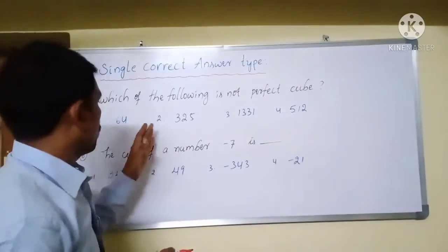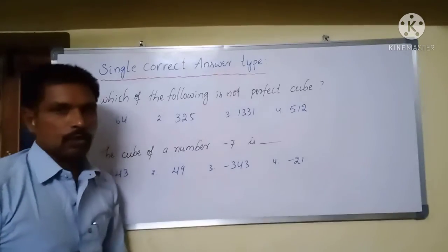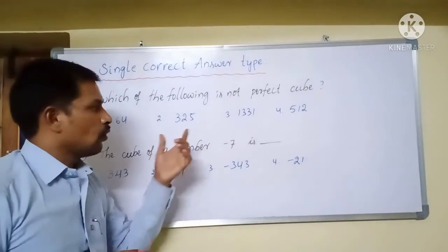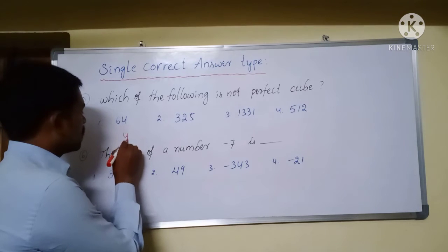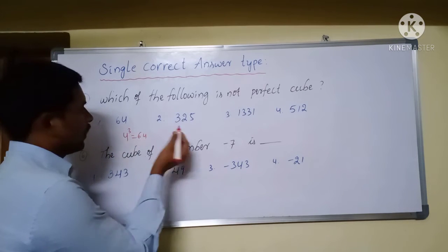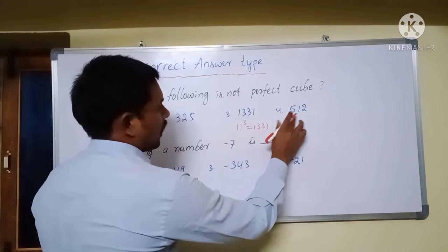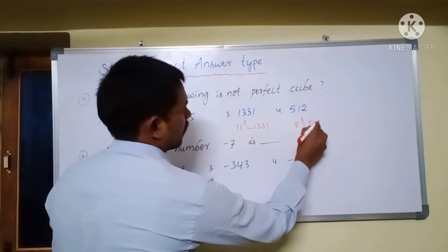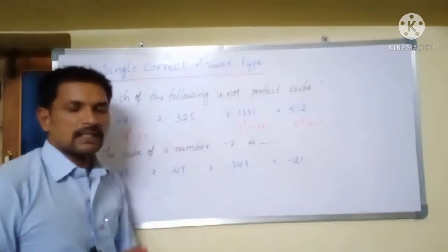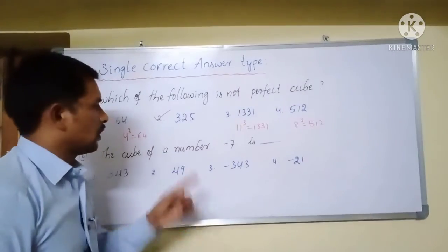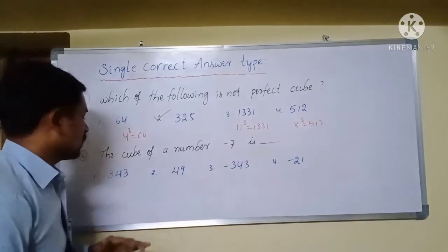Problem 5: which of the following is NOT a perfect cube? Observing the options: 64 = 4³, 1331 = 11³, 512 = 8³. Using the table of cubes from 1 to 15, we can identify that 325 is not a perfect cube. So 325 is the correct answer.